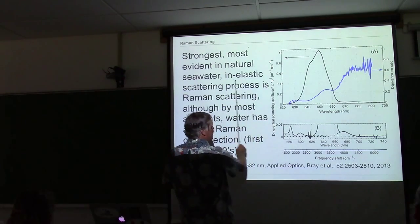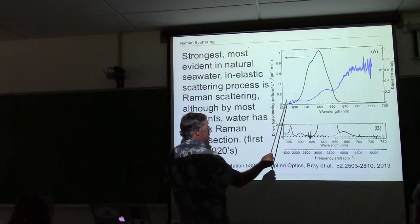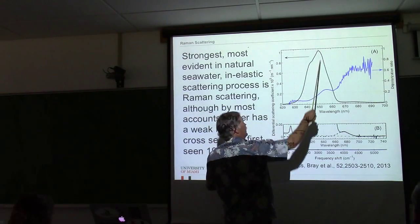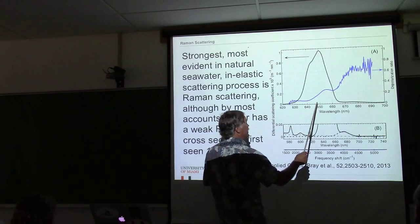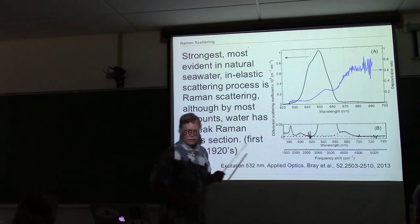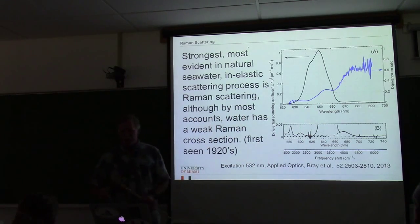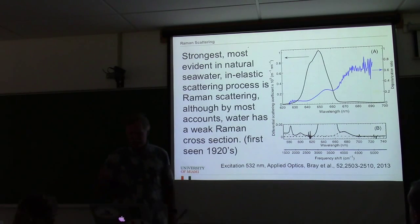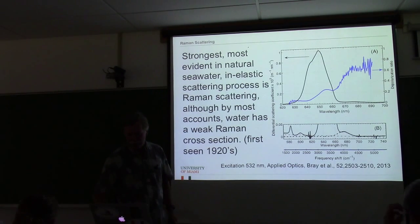If you excite at 532 nanometers, you're going to get a certain amount of light coming out at this higher wavelength — around 650 nanometers. A higher wavelength means less energy, because energy is inversely proportional to wavelength.